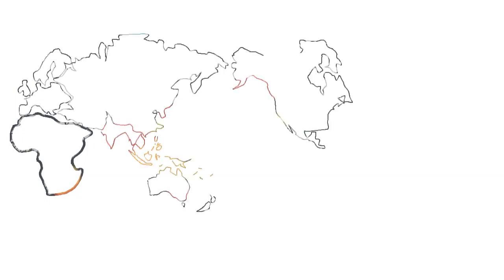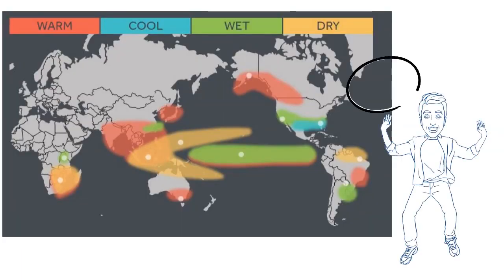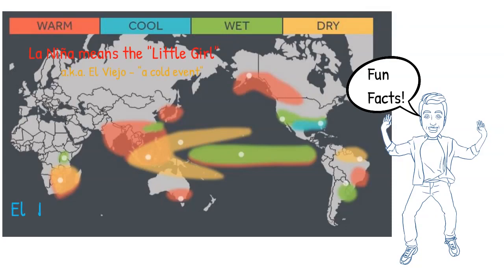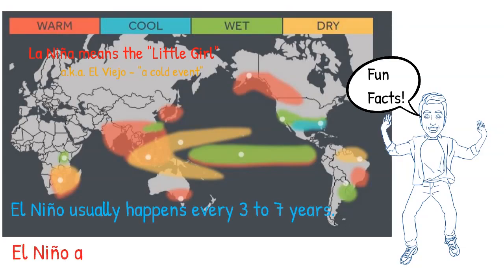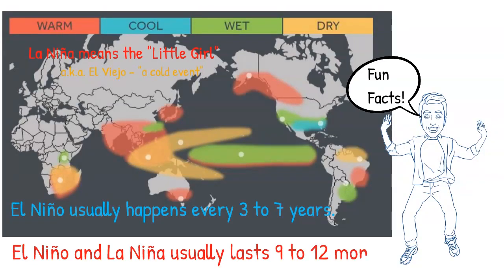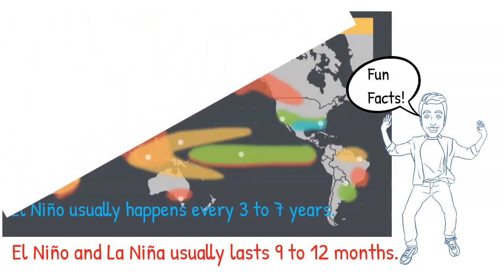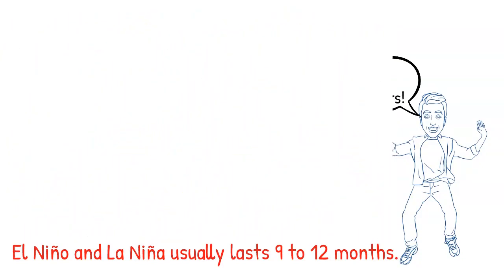La Niña doesn't always follow an El Niño, but is more likely to happen after a strong El Niño based on historical records. La Niña means 'the little girl' in Spanish and is also sometimes called El Viejo, which refers to a cold event. El Niño usually happens every three to seven years, and both El Niño and La Niña usually last nine to twelve months, though some may span years.